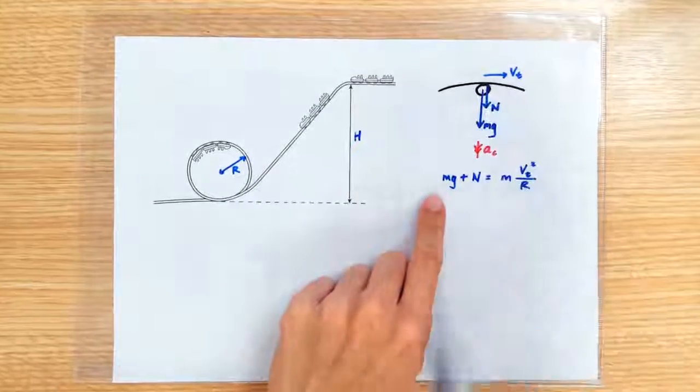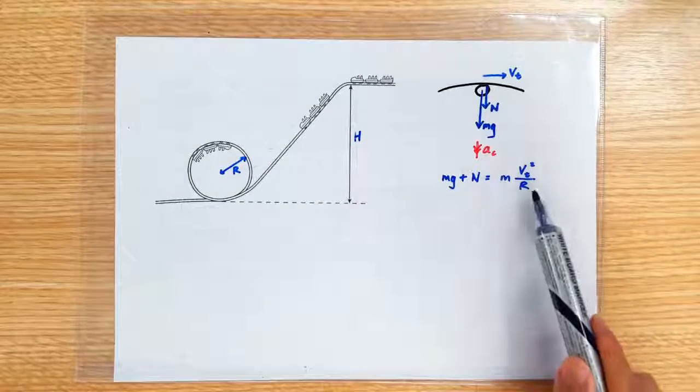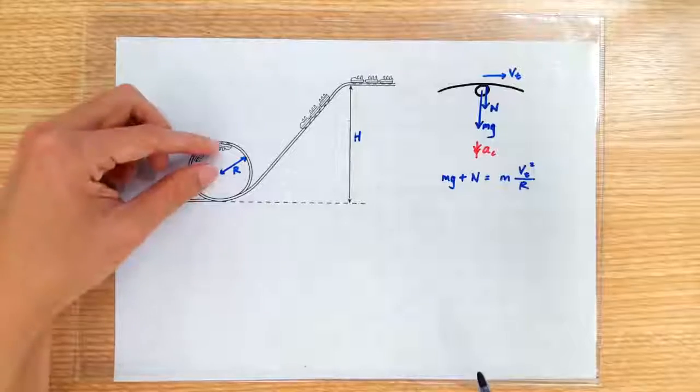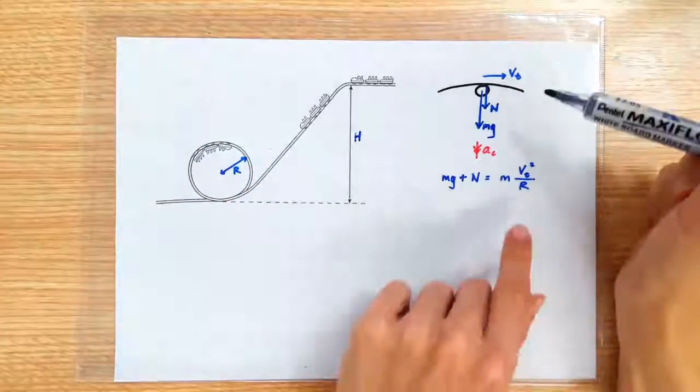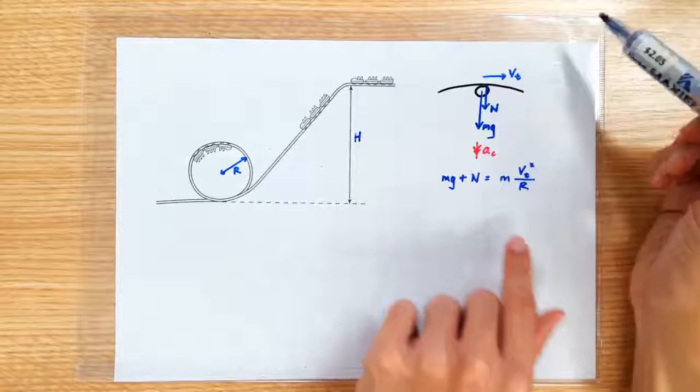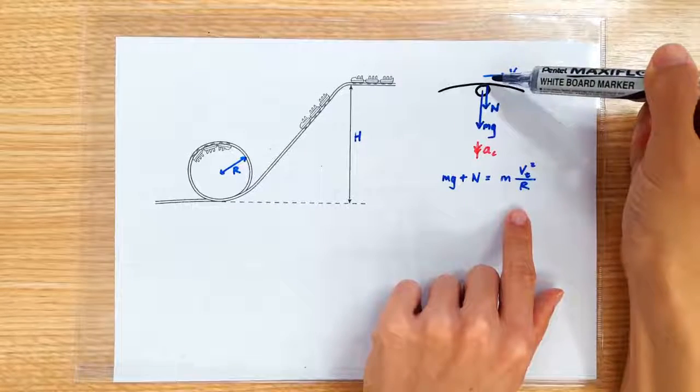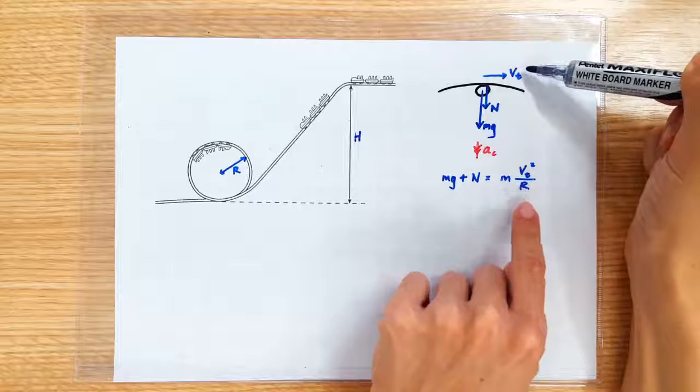So m is of course the mass of the roller coaster and big R is the radius of the circular motion, which is this length here. What this equation tells us is that if the roller coaster arrives at the top position at a very high speed...